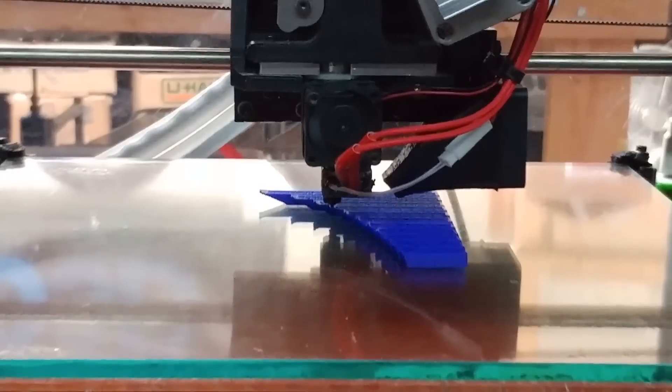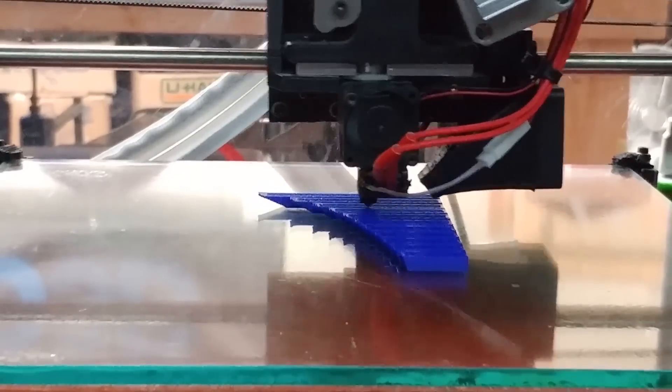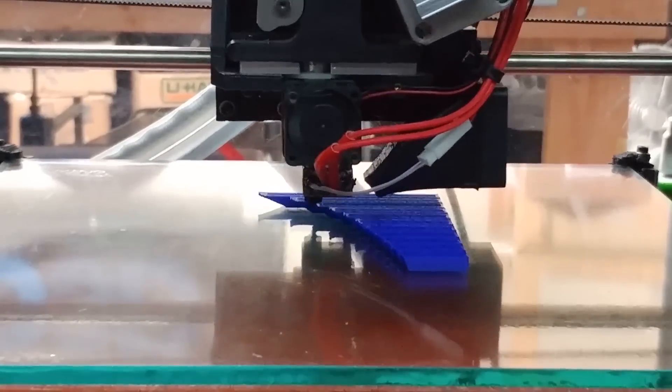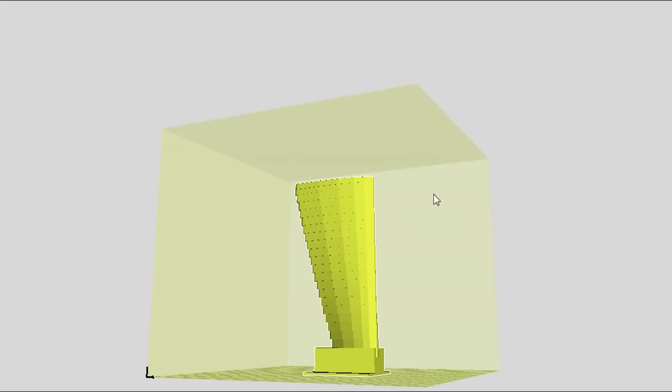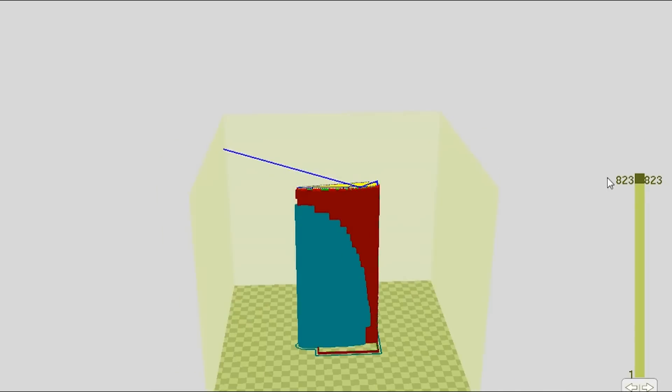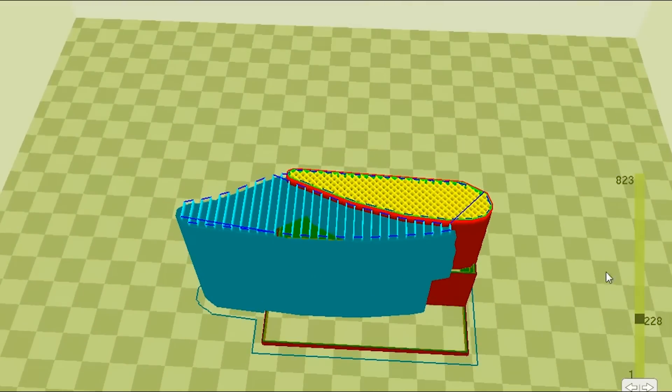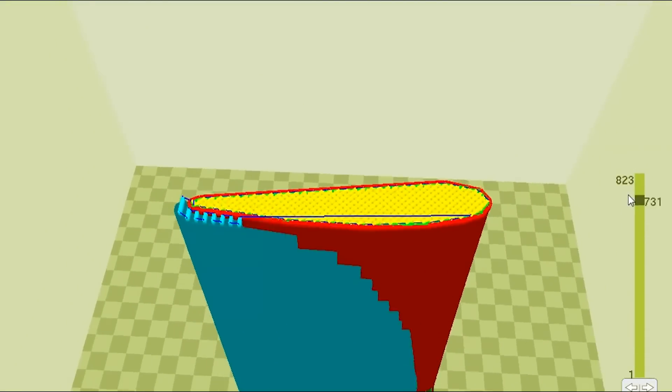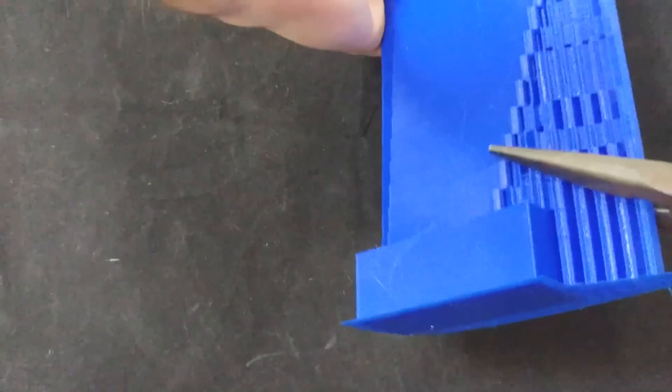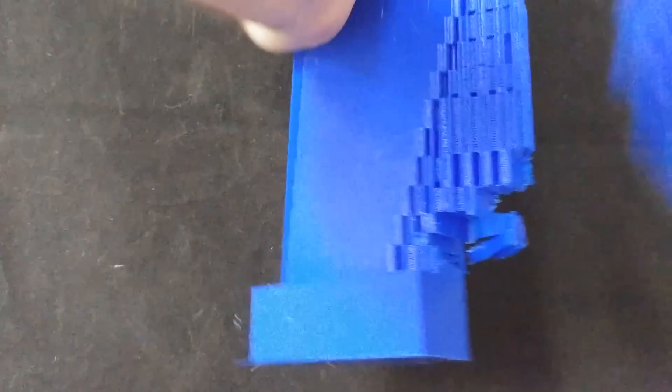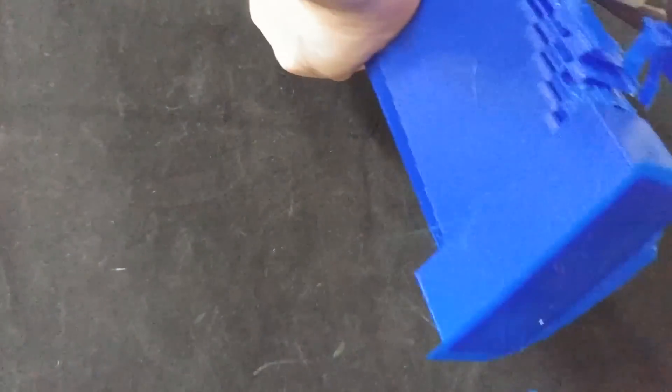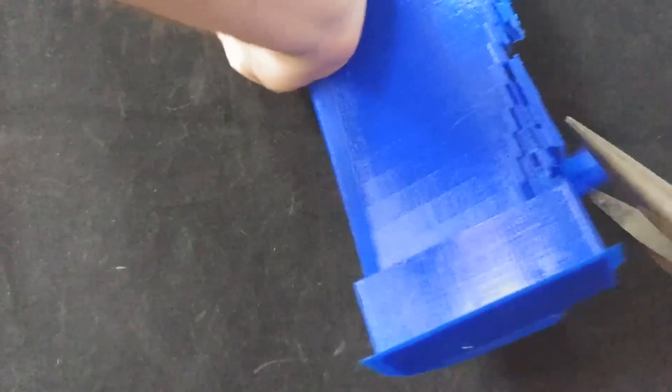Angles. Since FDM 3D printing melts plastic onto a print bed layer by layer, any extreme angles will require support material. This support material can be thought of as scaffolding that will break off and be cleaned up post print. Each material has its own angle that will require support material, but it is safe to assume anything with an angle more extreme than 45 degrees will need it. Limiting the amount of these overhangs will limit the amount of scarring as well as the amount of post print cleanup.